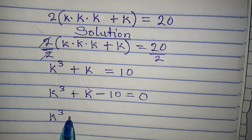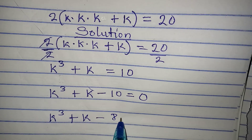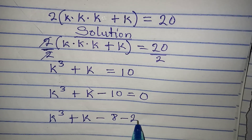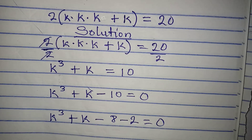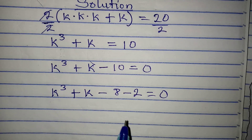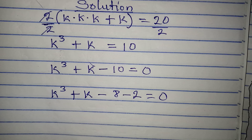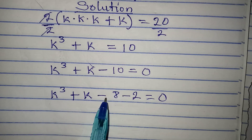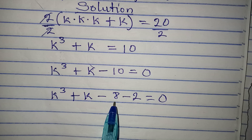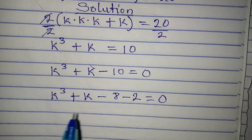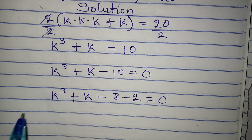We write k³ plus k minus 8 minus 2 equals zero, because minus 8 minus 2 gives us minus 10. Now, 8 alone can be written as 2 to the power of 3, and that will work perfectly with k to the power of 3.